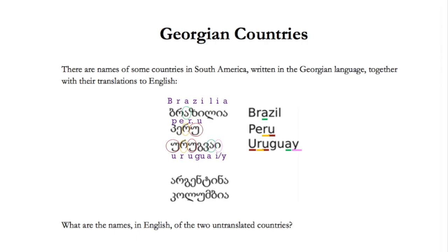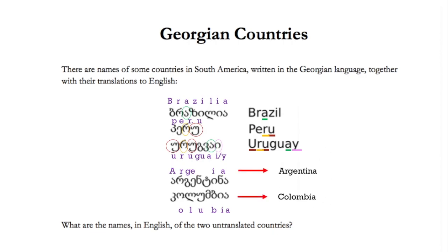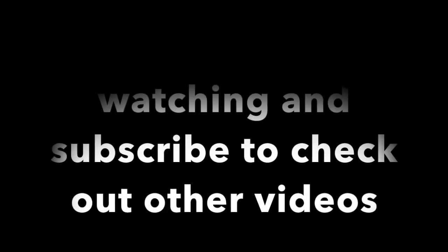Then we match each letter with its symbol to get the names of the two untranslated countries. We substitute the letters into the unknowns and get the two untranslated countries: Argentina and Colombia.